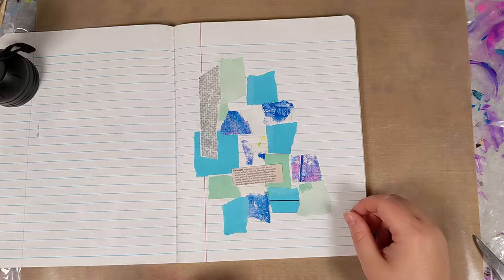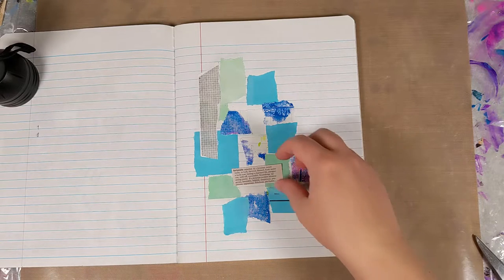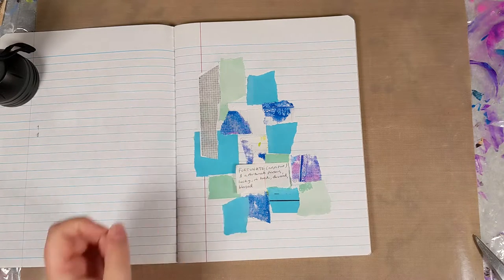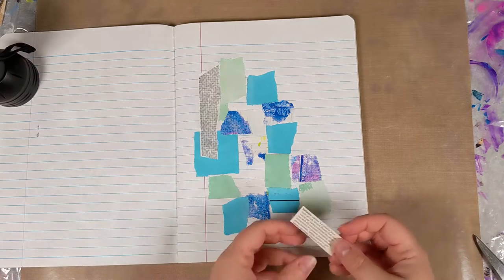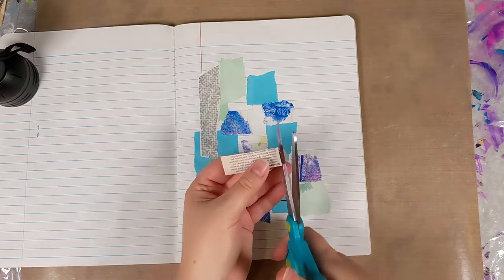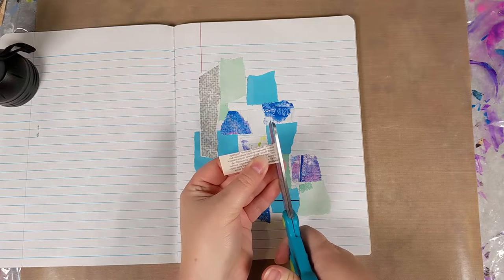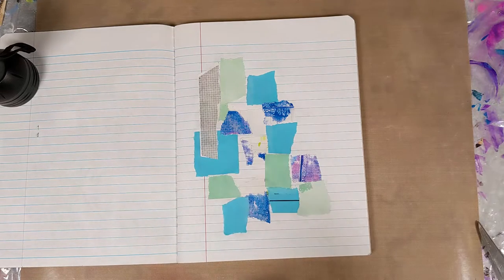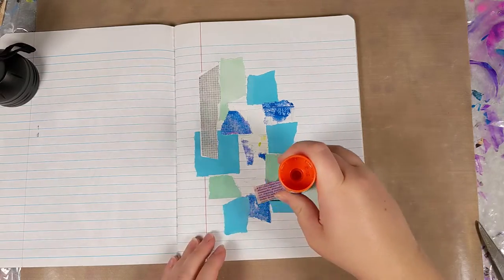I ultimately decided to go with the cutout one. I just liked the way the colors looked better but I think either would fit in that space. I just trimmed it up a little bit just so that it would be a little bit more the shape I was hoping for and then went ahead and put it in the page.